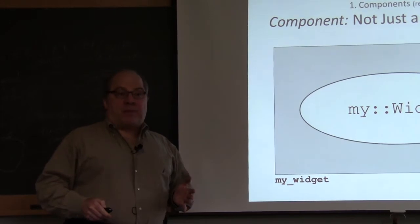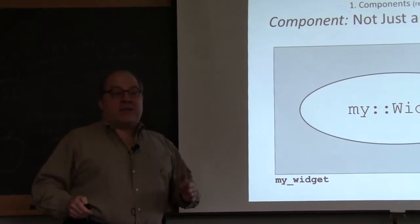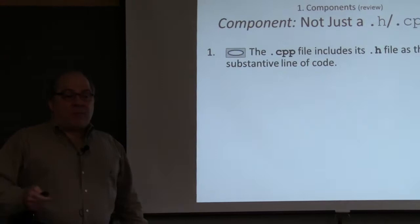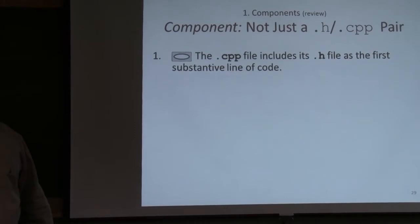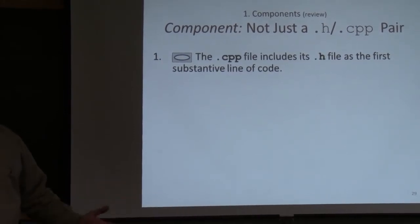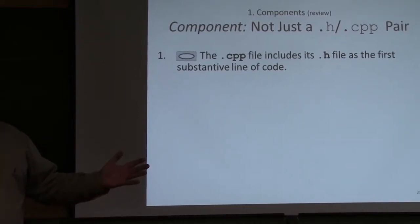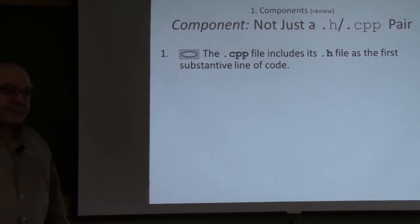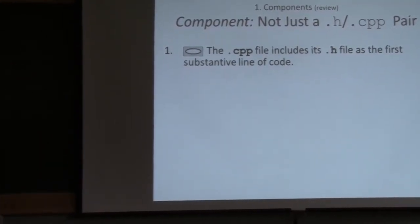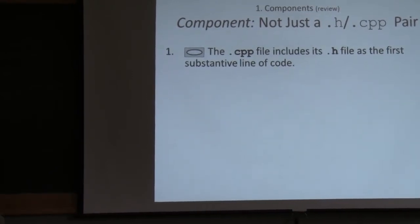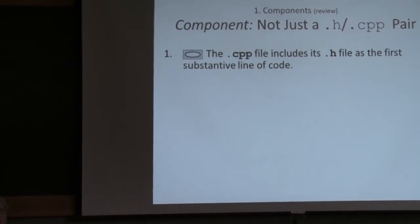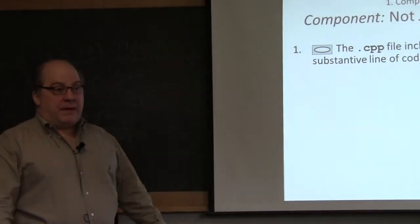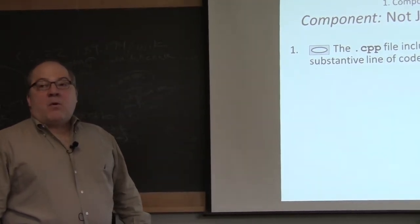We have four fundamental properties. The first one: the .cpp file includes its .h file as the first substantive line of code. Why is it the first substantive line? One reason to have it there at all is so the code will compile. But why make it first? The key reason is: if you make it first, there's at least one file where it's compiled in isolation, hasn't seen anything else. Therefore, when you hand it off to your client, it doesn't break in their hands because of include-order dependency.